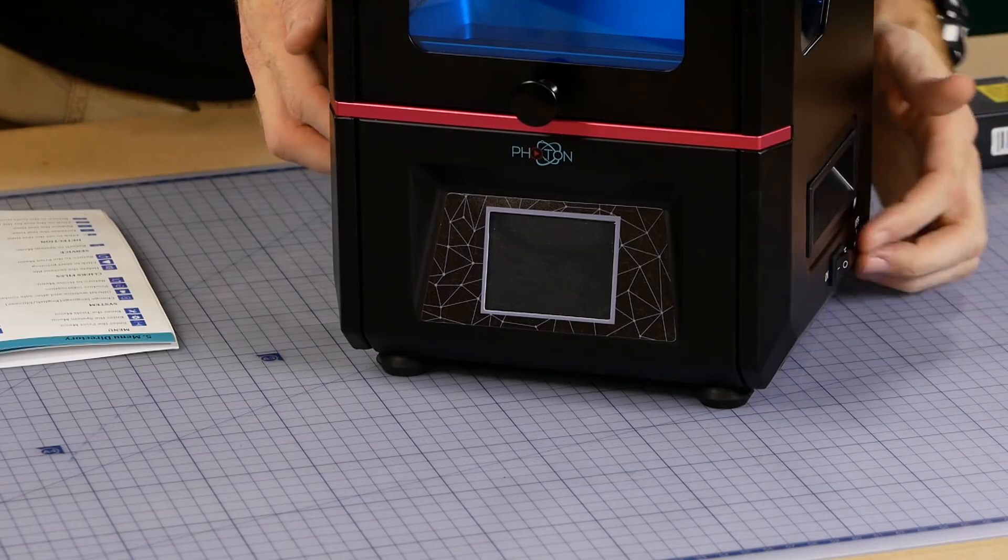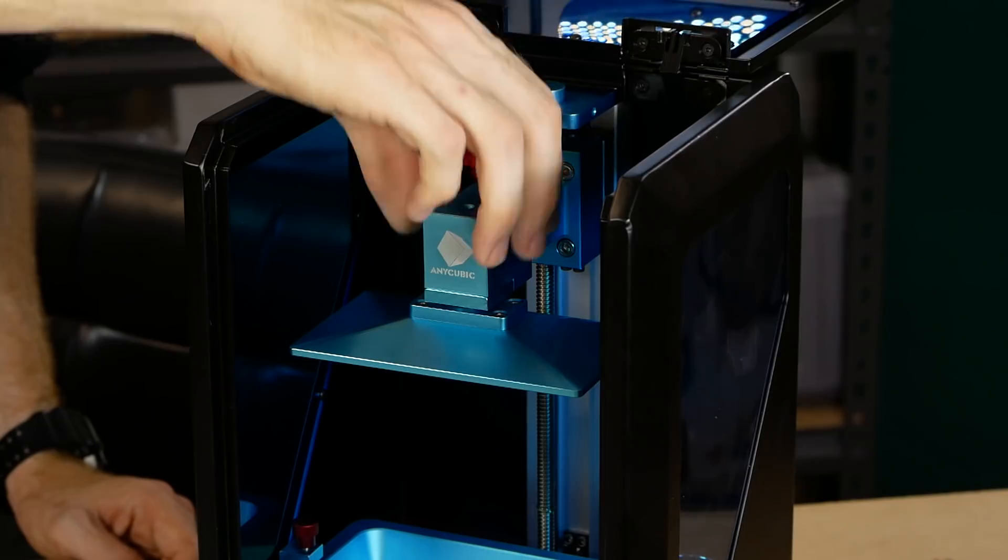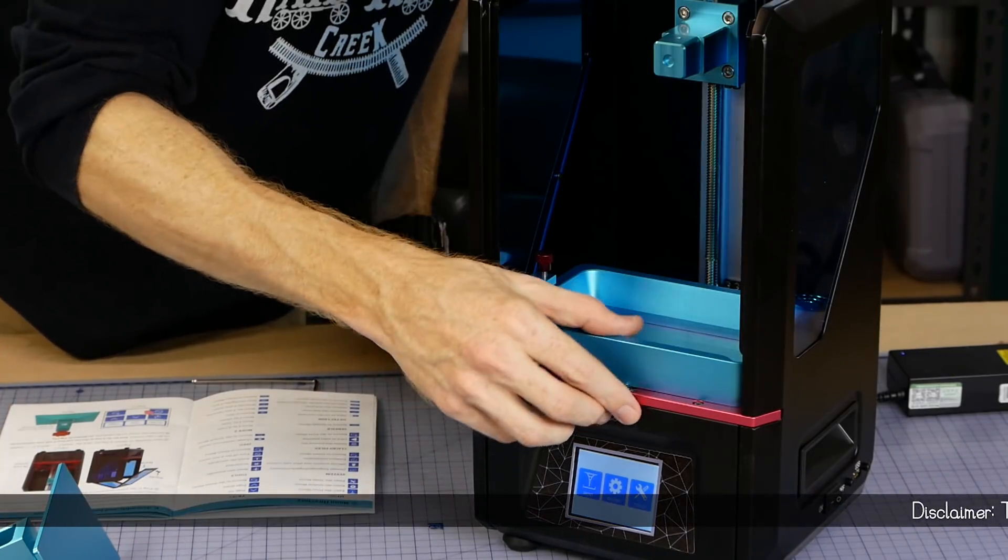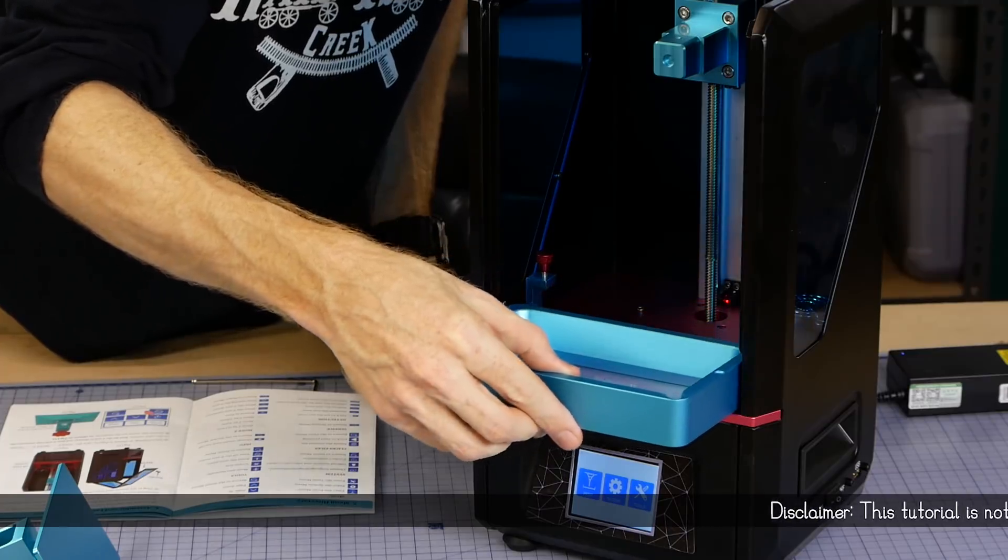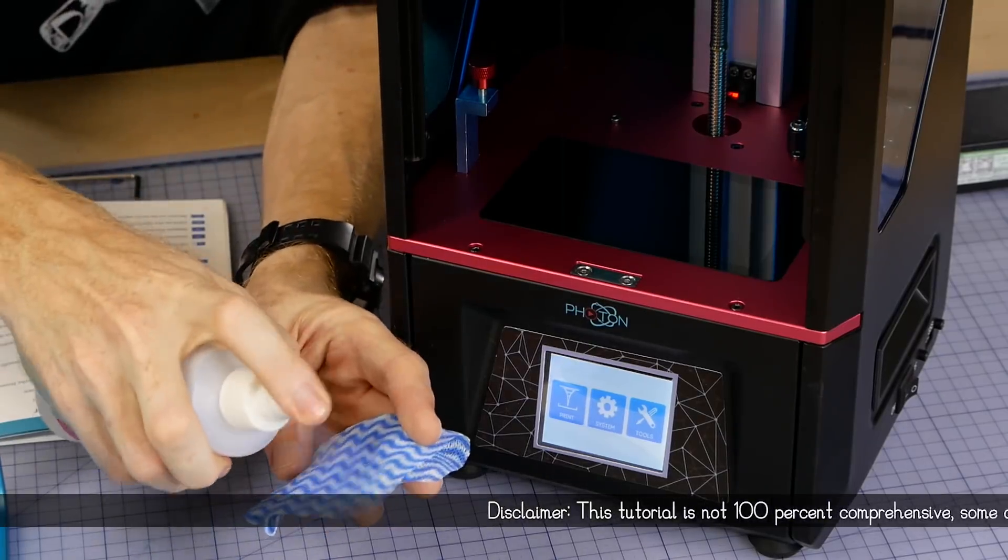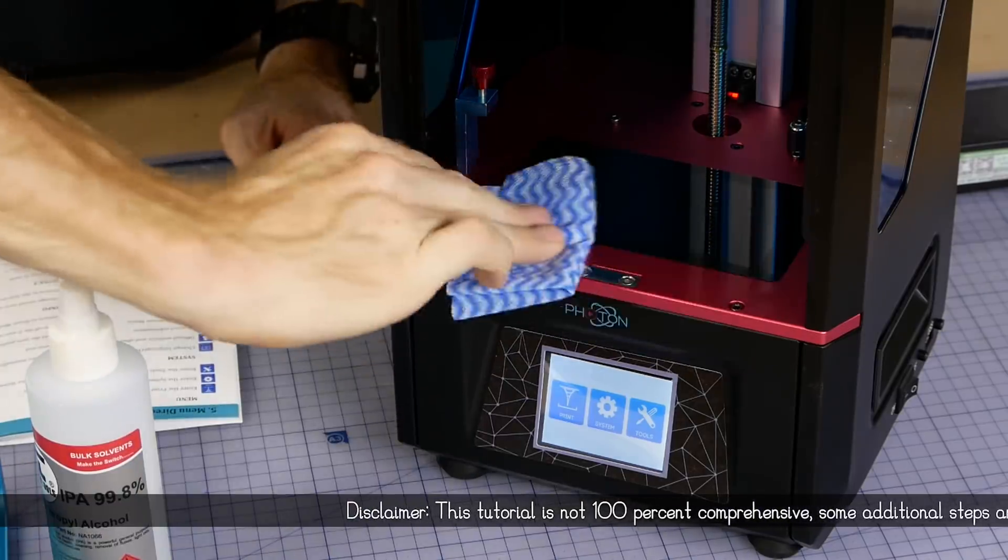Because the curing process of the resin is achieved by using an LCD screen and UV light it's important that the LCD screen is clean to avoid imperfections in the final print. For this I'm using isopropyl alcohol to ensure the screen is fingerprint and dust free.